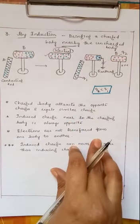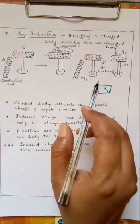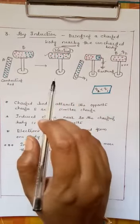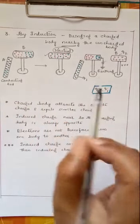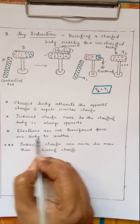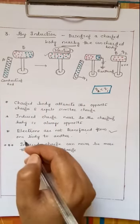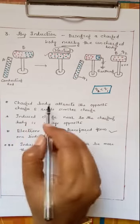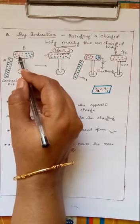And all these charges will uniformly get distributed on the surface of the B conductor. So what you observed in this? We are going to see that here transfer of charges will not take place from one body to another body. That is, electrons are not transferred from one body to another body, one thing. And the charged body attracts the opposite charges.